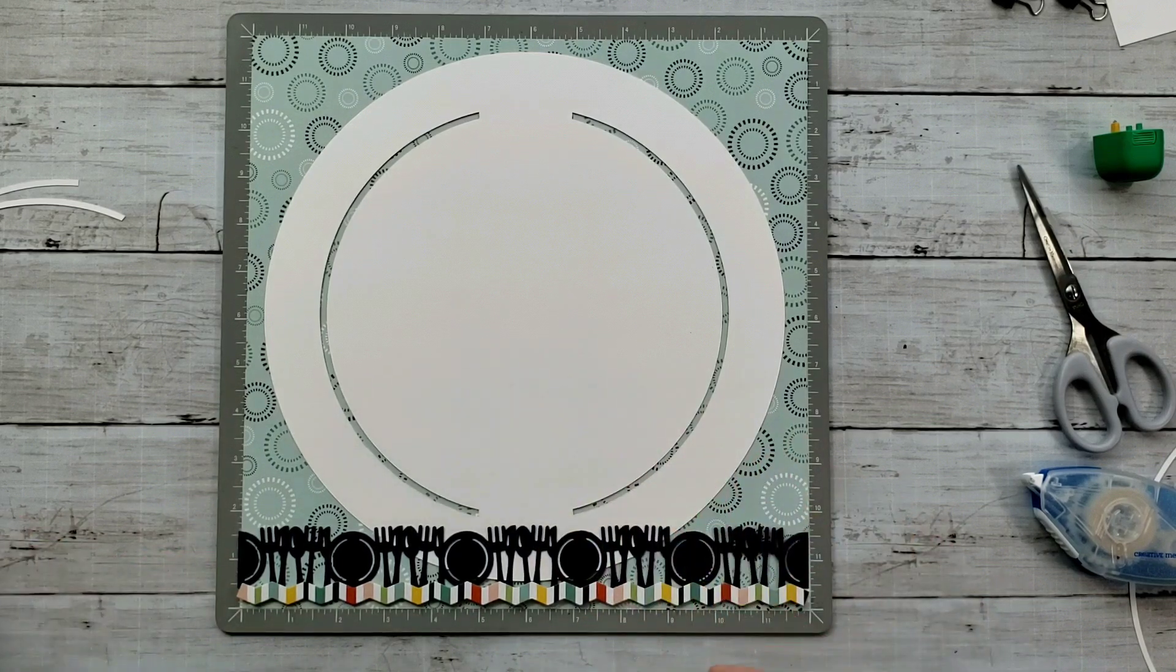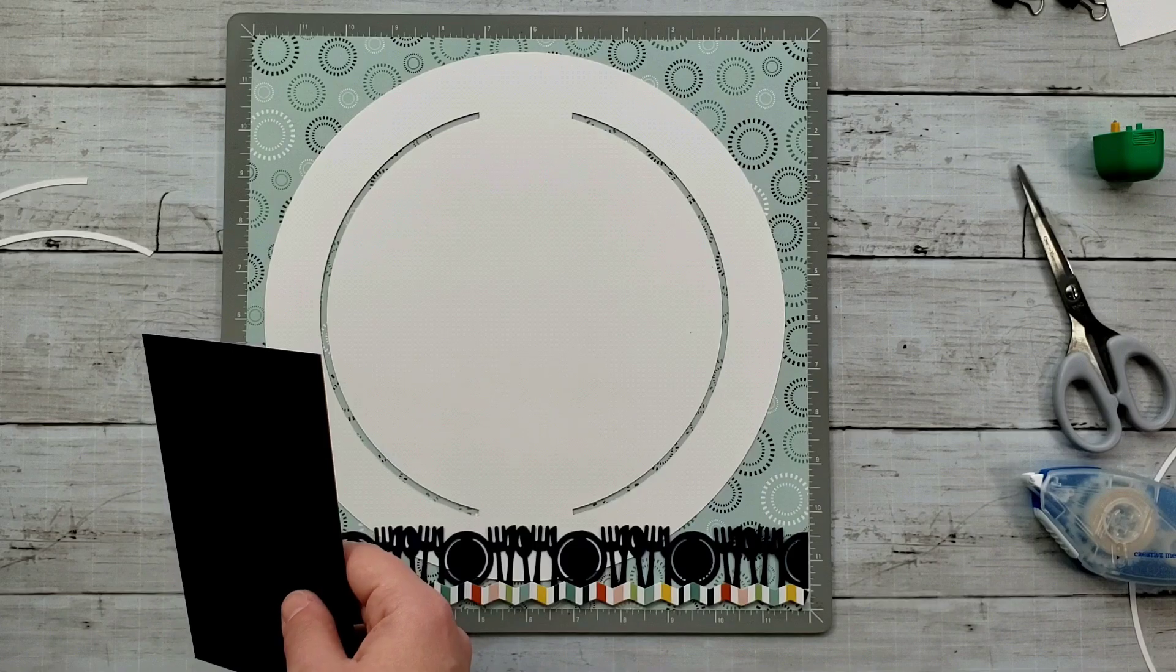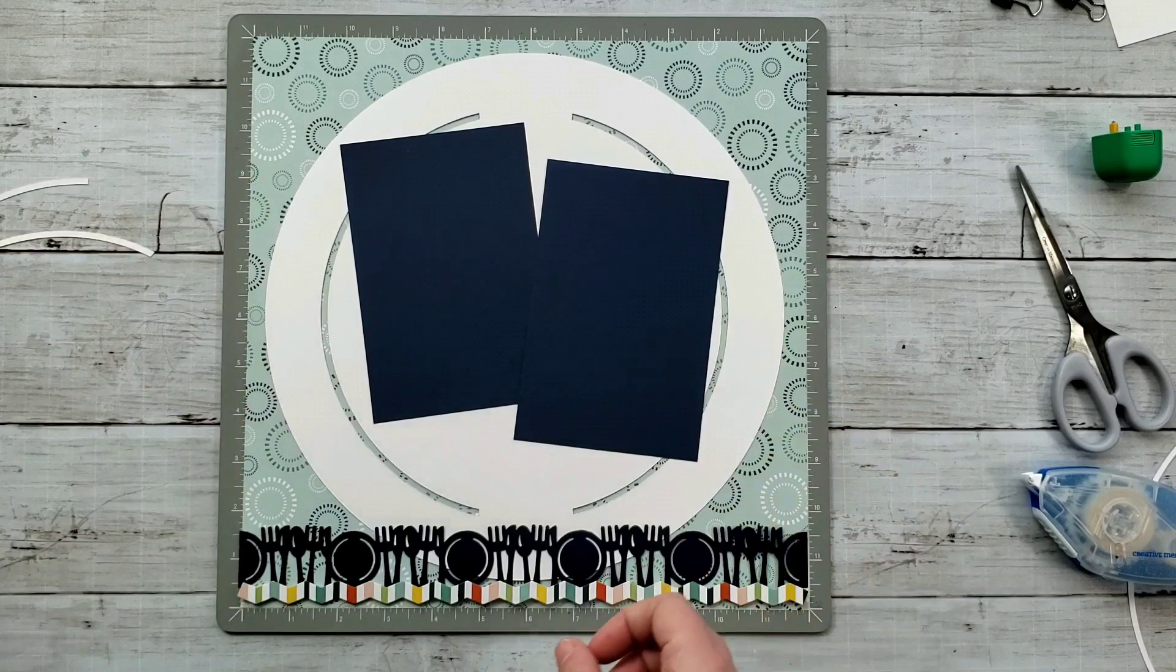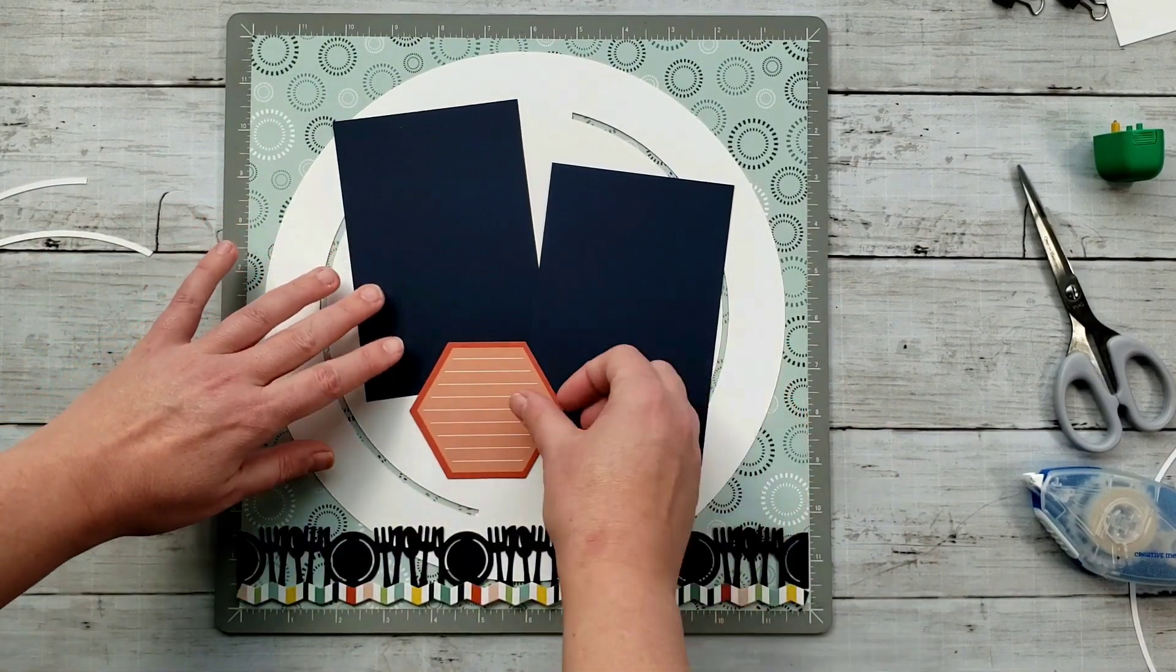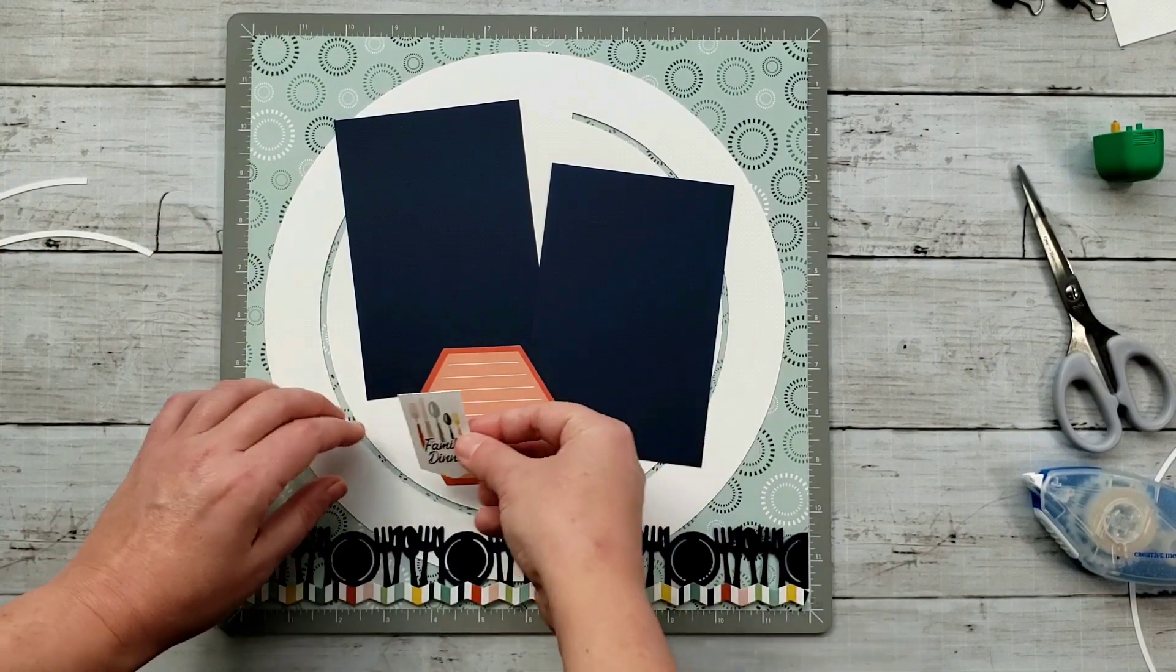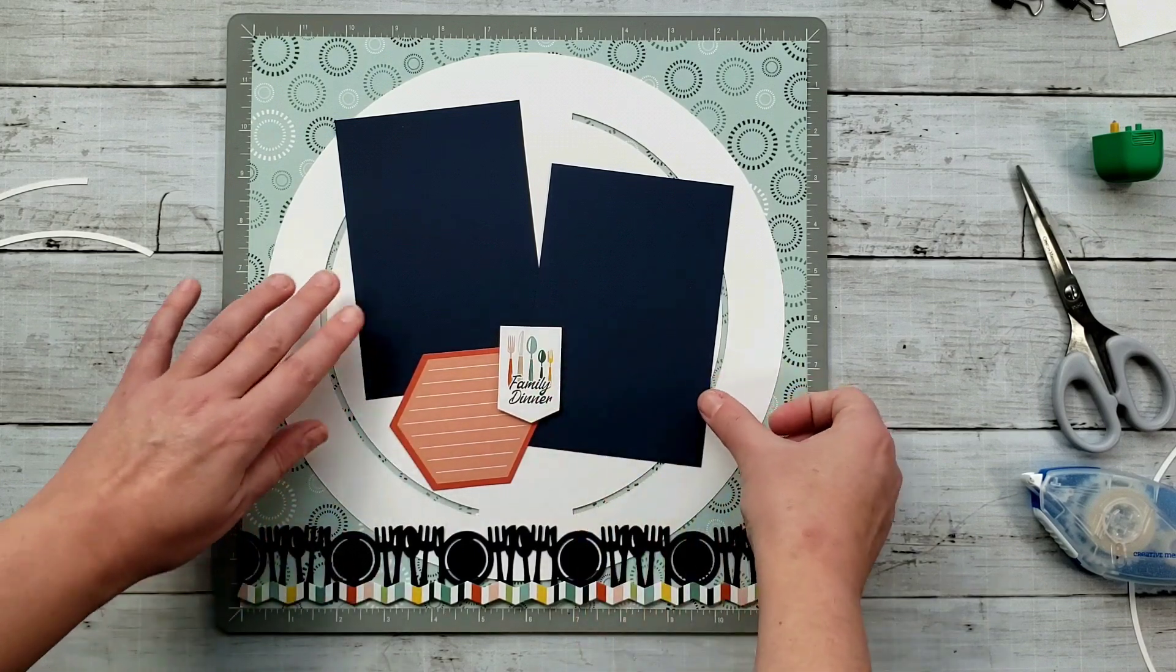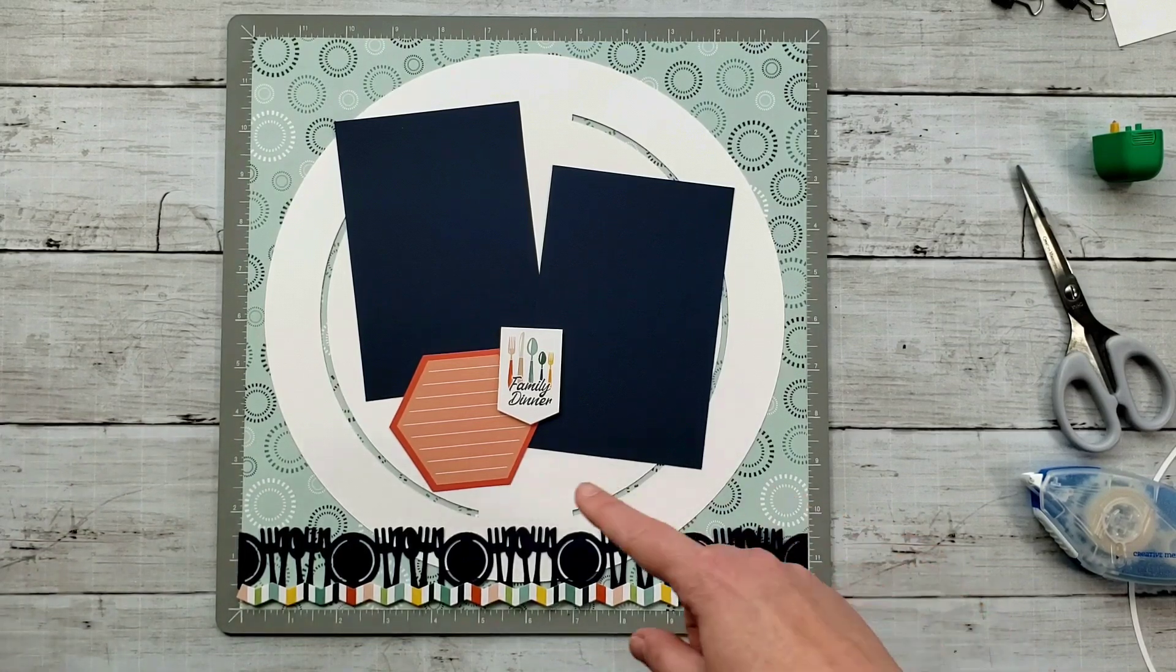So you can see there, we've got this going, we might go ahead and we'd put on a couple of, I have some four by six Navy mats that I've cut just would kind of, you know, mimic what photos might look like. There's a really fun hexagon journal box that is in the embellishments. And then maybe over here, I would grab the family dinner sticker and you can see how the page starts to take shape.